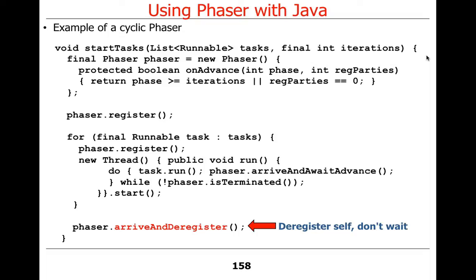The last thing that happens, concurrent with all this, is the main thread comes along and deregisters himself. That means when he goes away, the other threads can return from the exit barrier and check whether they've been terminated, and if not, loop back around again.